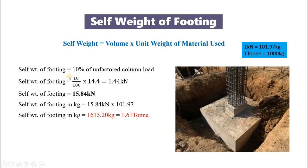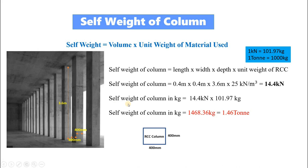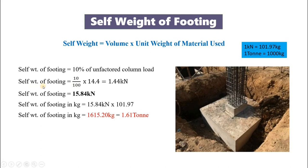Next is self weight of footing. Self weight of footing is taken as 10% of the unfactored column load. Here the self weight of column is 14.4 kN. So the self weight of footing equals 10% of 14.4, which gives 1.44. Then self weight of footing equals 1.44 plus 14.4, giving 15.84 kN. If you want in kg, multiply by 101.97. Then we will get the self weight of footing as 1,615 kg, that is 1.61 tons.